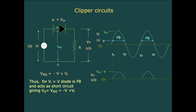When the diode is forward biased it acts as a closed switch, and V0 equals VAG, which is minus V plus Vi, from T1 to T2 and again from T3 to T4. At time T1 Vi equals V, so V0 equals zero. Similarly at T2, T3, and T4 V0 equals zero. When the input reaches its positive peak Vm, the output equals Vm minus V.